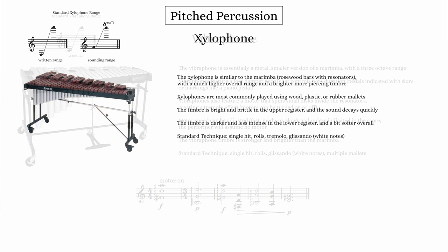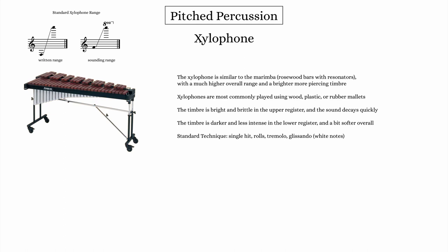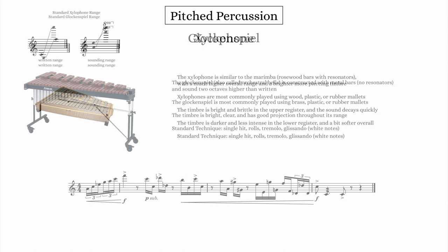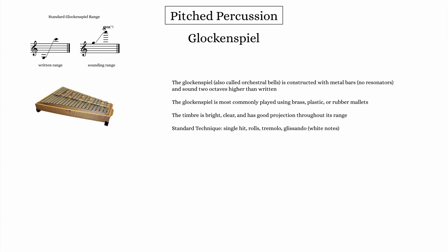The xylophone is essentially a smaller, more compact marimba with a much higher range and brighter, more piercing timbre. It sounds an octave above written pitch, and the notes have a relatively short decay time. Because of its size and pitch range, it's often paired with agile woodwind passages. The glockenspiel, also known as orchestral bells, is a much smaller pitched mallet percussion instrument made from metal bars without resonators. It sounds two octaves above written pitch and is played with brass, plastic, or rubber mallets. The timbre is bright and clear, and the sound resonates well through an orchestral texture.